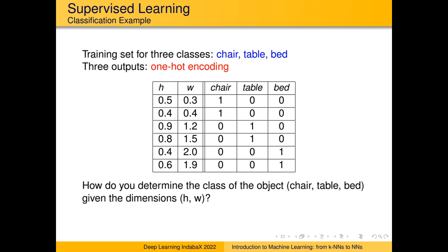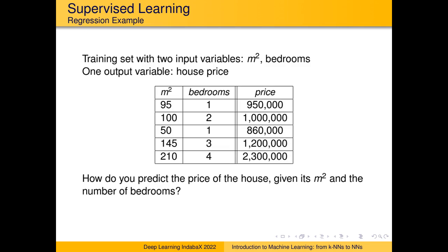The algorithm needs to figure out that smaller heights and widths are typically associated with chairs, smaller heights but larger widths are associated with beds, and taller heights and medium widths are associated with tables. The algorithm can figure these patterns out. Here is a regression example: predicting property price based on just two input variables — square meters and number of bedrooms. In this case, the model output will not be a one-hot binary thing but rather a real value — the predicted price.